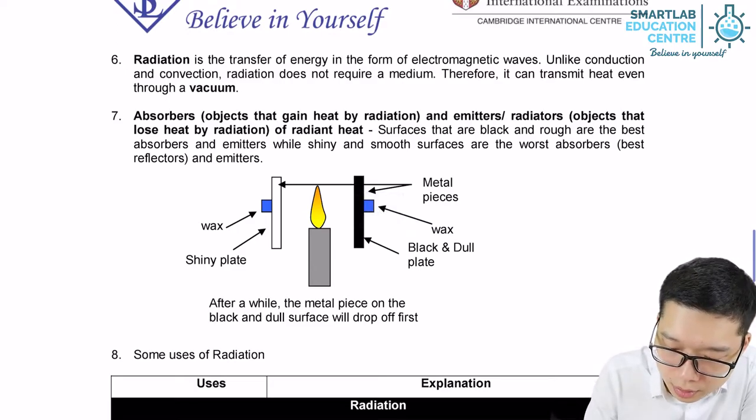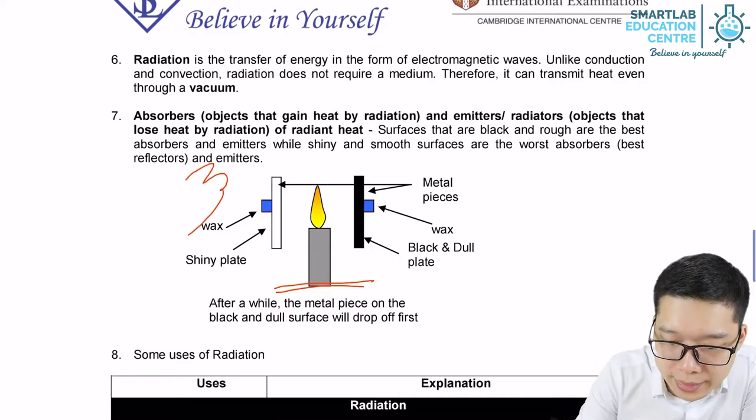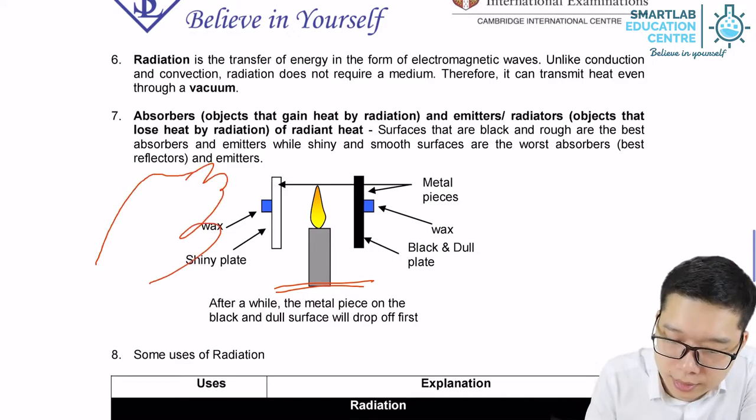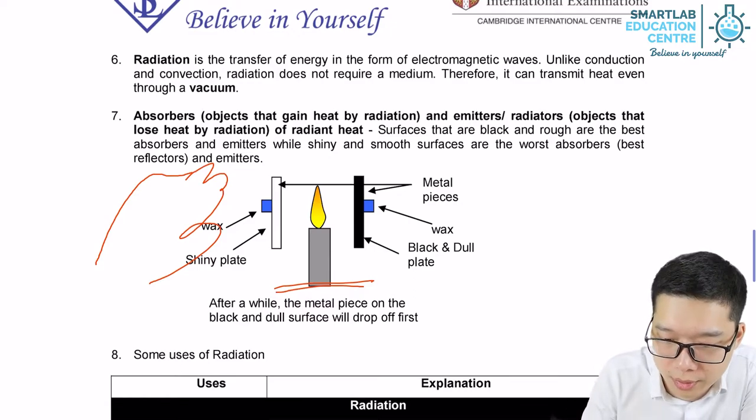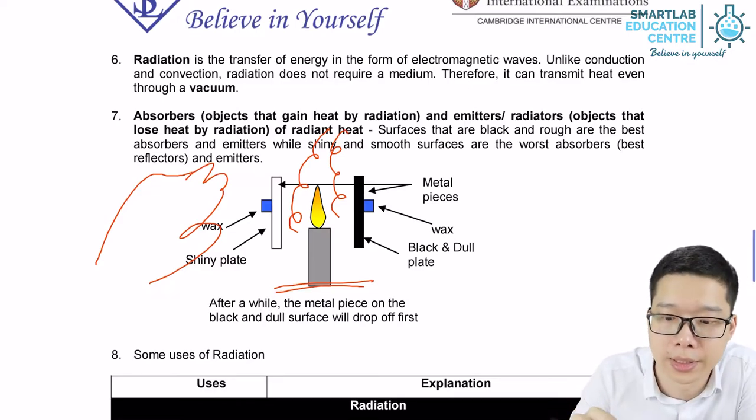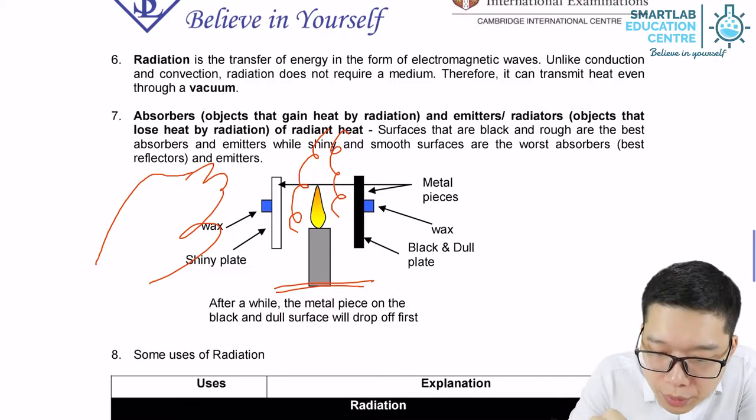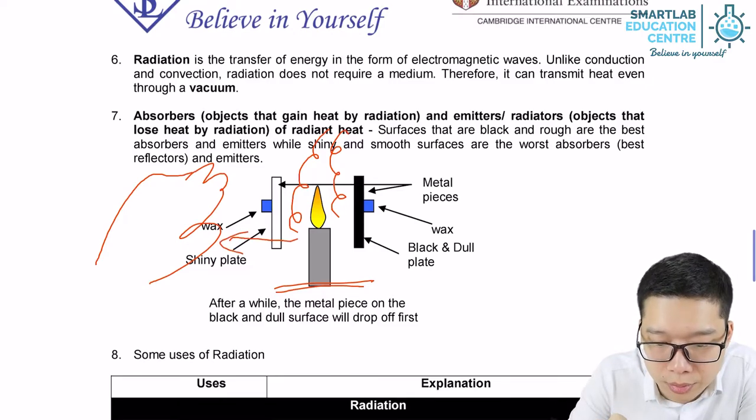Another example, if we have a candle over here, if we place our hand over here, we can feel the warmth. Some of warmth is due to a convection current so that the air becomes warmer. And then some of the warmth we feel is directly due to radiation.